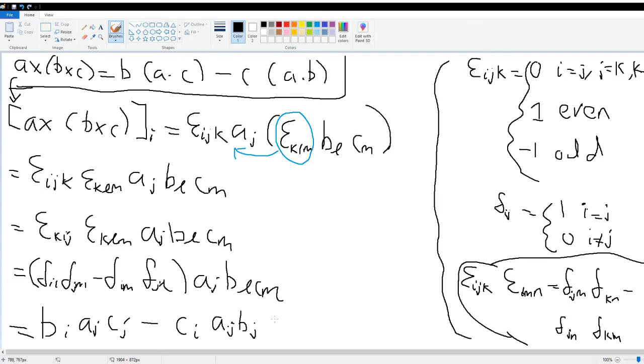Running out of space, we'll go up here. This is equal to b_i, and now because these a's and c's and then this a and b have the same subscript, we can write it as a dot product: a dot c.